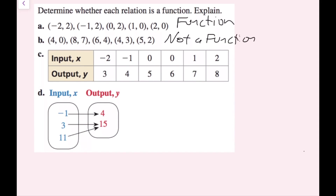Remember, whenever we're dealing with ordered pairs or x and y values, x is almost always the input and y is almost always the output. For part c, I look at my input-output table. For my inputs I have negative two, negative one, zero, zero again — that's a red flag — one, and two. This zero goes to five, and this zero goes to six. Since each input does not go to a unique output, because zero goes to two different outputs, this is not a function.